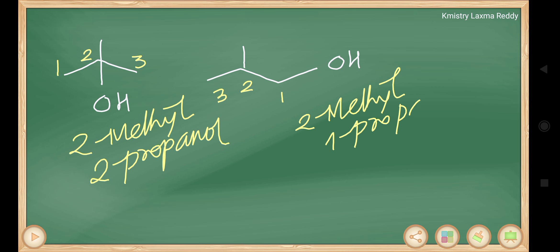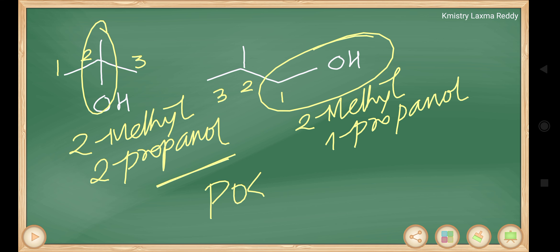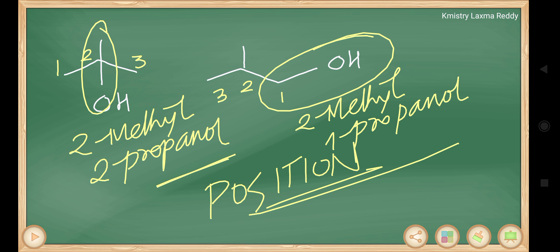There is a difference at the position of the OH group, that's why these are called position isomers. Tertiary butyl alcohol and isobutyl alcohol are position isomers.